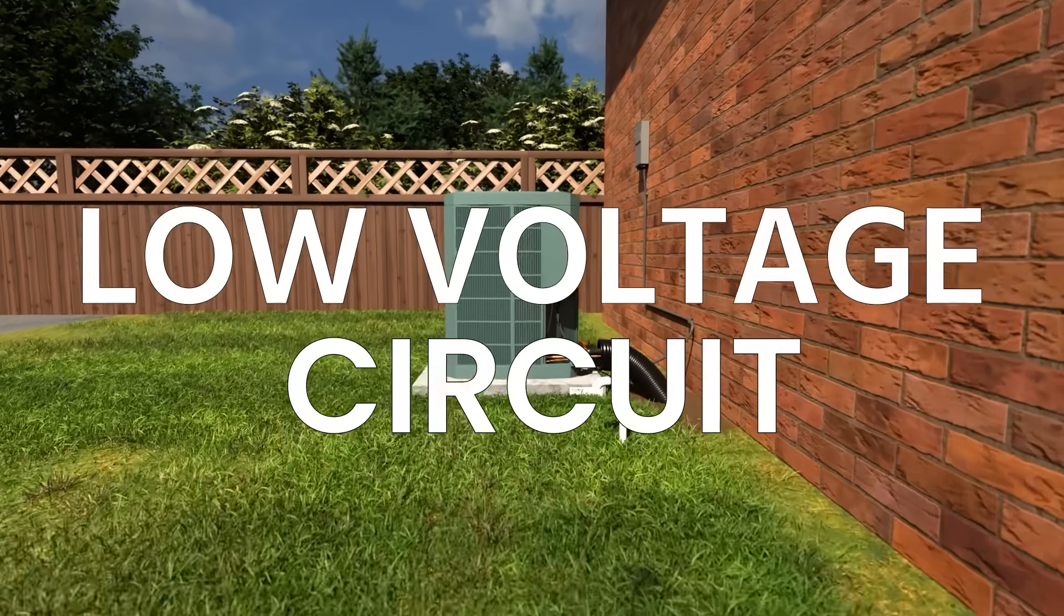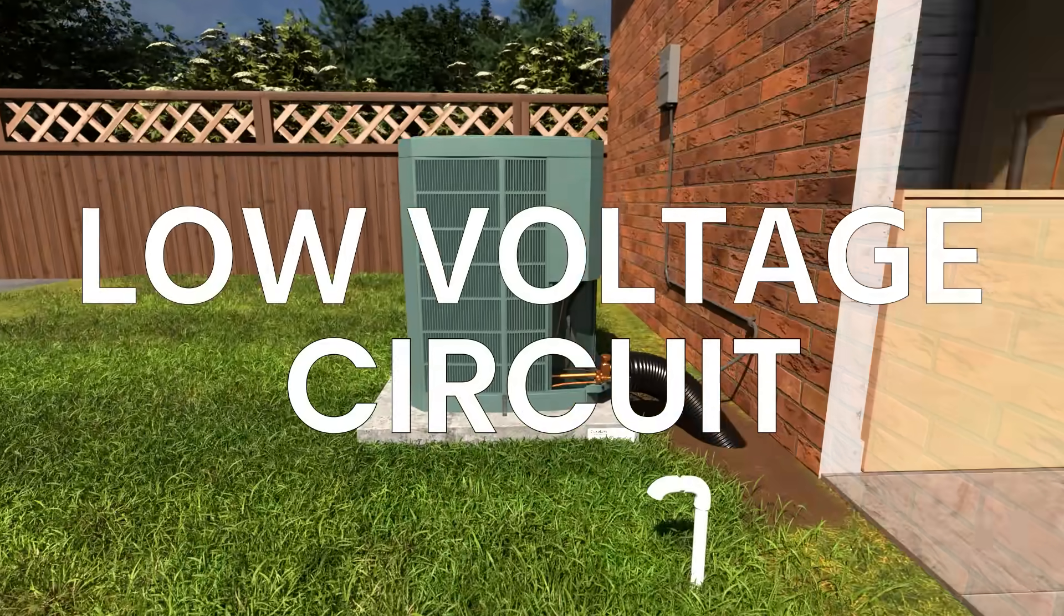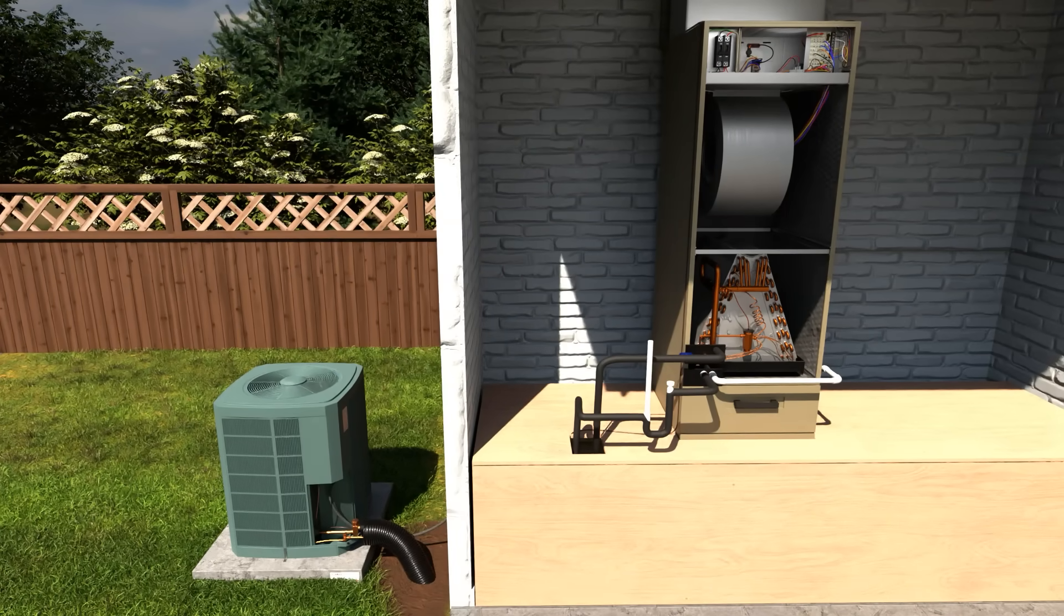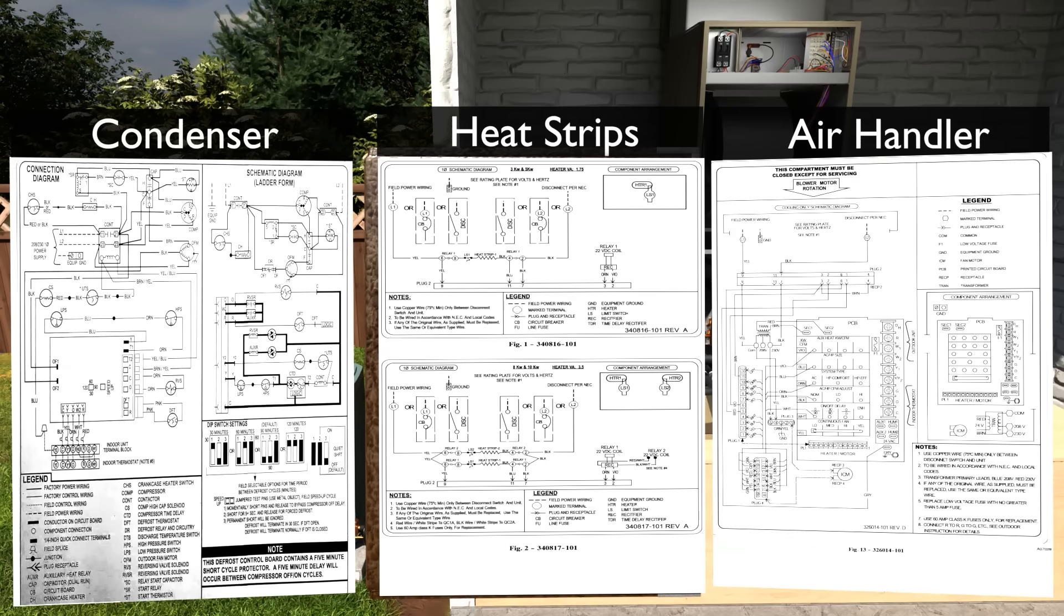In this video, we're going to talk through the low-voltage electrical circuit on a typical heat pump system. Note, this is a Carrier system, and we're going to be talking through the condenser, the heat strips, and the air handler.